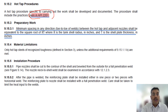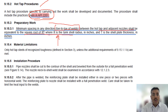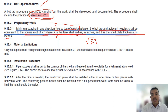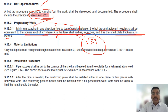Hot tap connection size and shell plate thickness is a table: for connection size less than or equal to 6 inches, the minimum shell plate thickness is 3/8 inch — this is an open book question. Hot tap procedures follow API 2201. Preparatory work: minimum spacing in any direction, toe-to-toe, between a hot tap and adjacent nozzle shall equal the square root of R×T, where R is the tank shell radius in inches and T is the shell plate thickness in inches. This is a closed book calculation question.